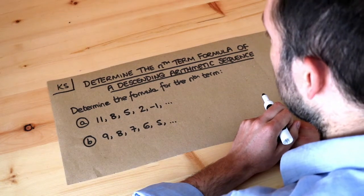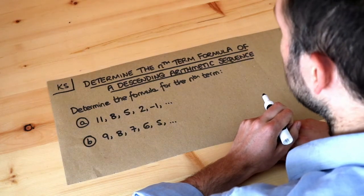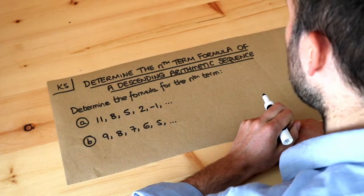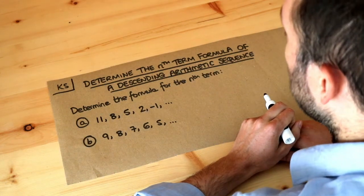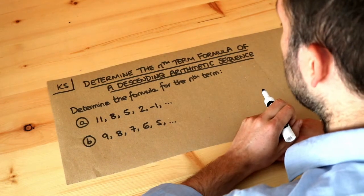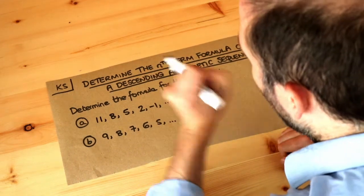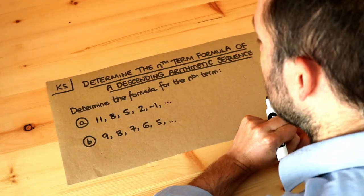Hello and welcome to this Dr Ross Maths key skill video on determining the nth term formula of a descending arithmetic sequence. Now in a previous video we explored what arithmetic sequences are. They're just sequences where you're adding or subtracting the same amount each time.